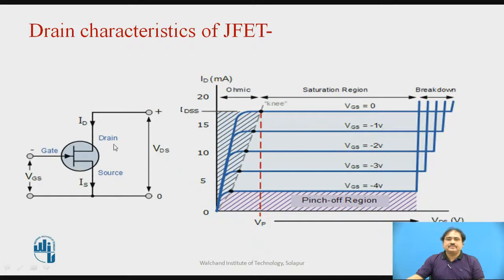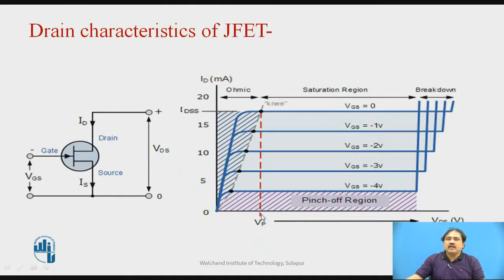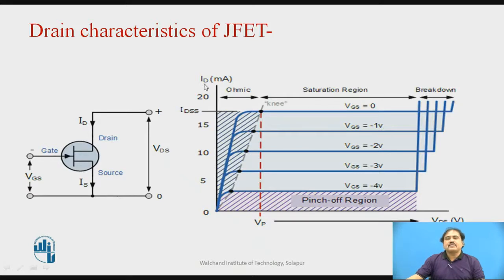We keep this voltage VGS constant and then vary the voltage from drain to source, measuring the current flowing in the drain. In the graph we are going to see some distinct portions. The region from 0 to the voltage called Vp is normally called the ohmic region. Then from Vp onwards there is a flat portion of the graph named the region of saturation, and after some point the graph increases quite sharply. The y-axis shows the current ID and the x-axis shows the voltage from drain to source.